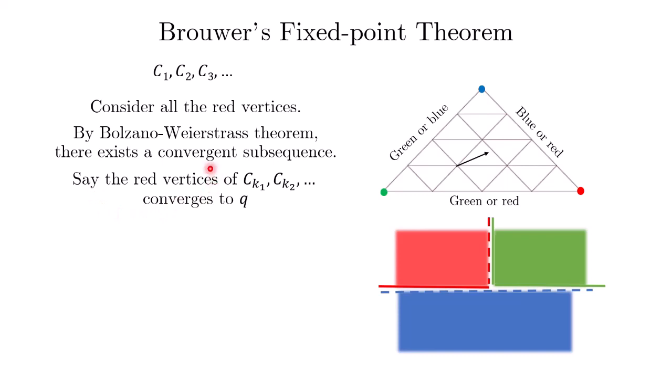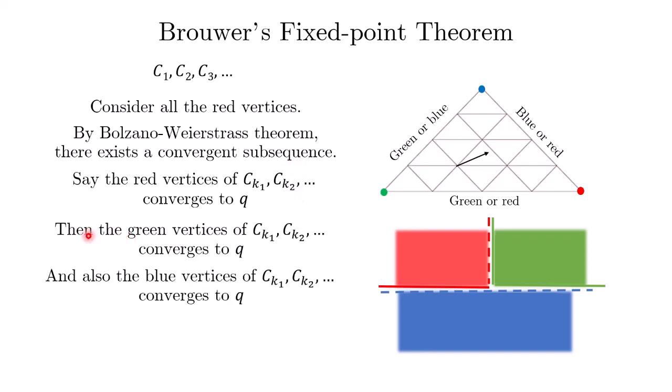Let's say the red vertices of this subsequence of rainbow triangles converge to a point Q. Because these sub-triangles are getting smaller and smaller, the green vertices of the same subsequence converge to the same point Q. At the same time, the blue vertices of this subsequence also converge to Q.